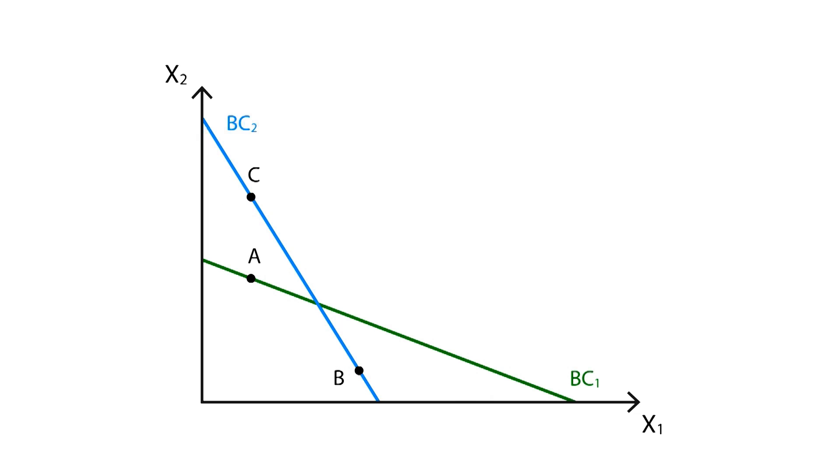Considering this new budget constraint and the weak axiom of revealed preference, we know that both bundles B and C are preferred to bundle A. However, it seems impossible to determine whether B is preferred to C or vice versa.